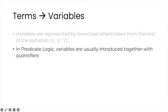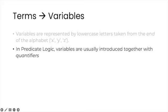In predicate logic, variables are usually introduced together with quantifiers. And why do we need quantifiers? Well, not all sentences are about specific individuals. Some are interpreted in a general way. For instance, a sentence like everything is illuminated is not about any specific thing that is illuminated. Rather, the sentence is general, it is about the totality of things in a given domain of discourse.